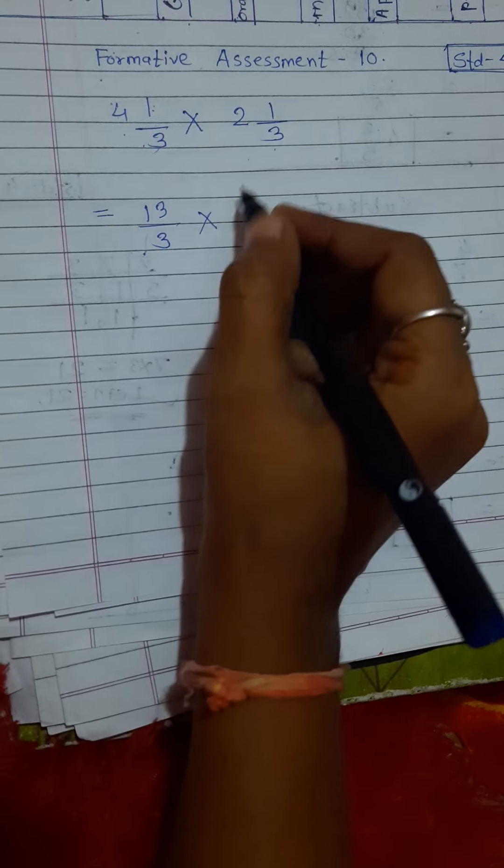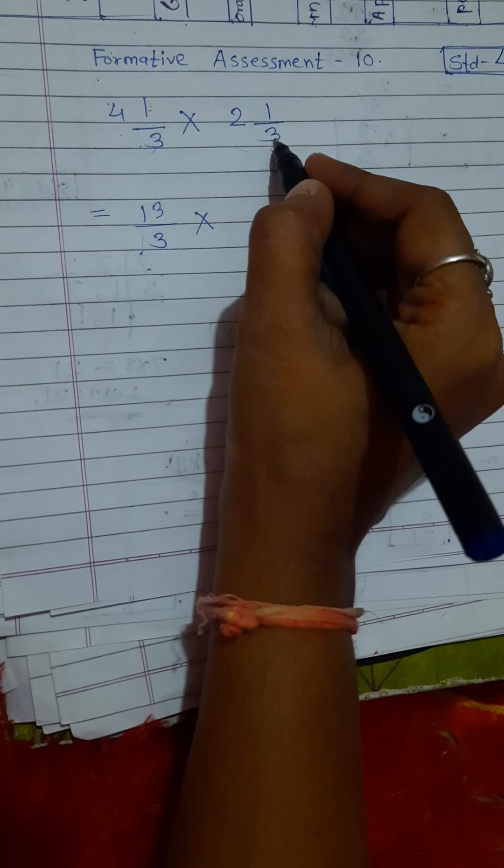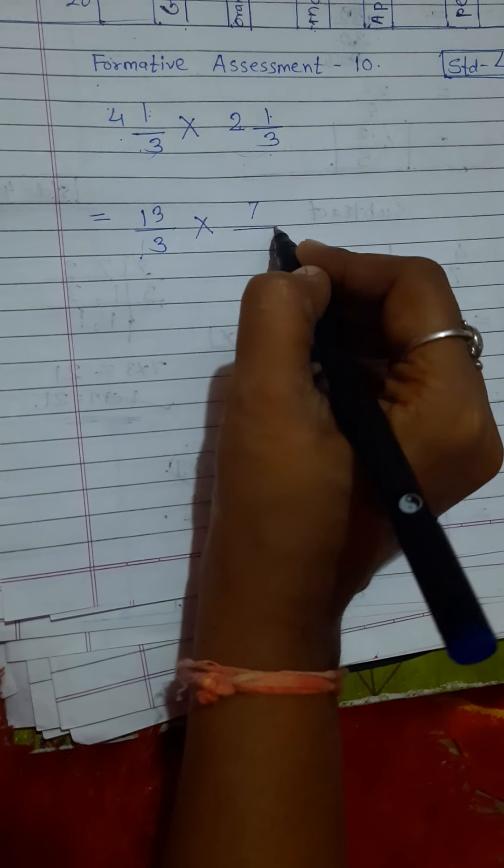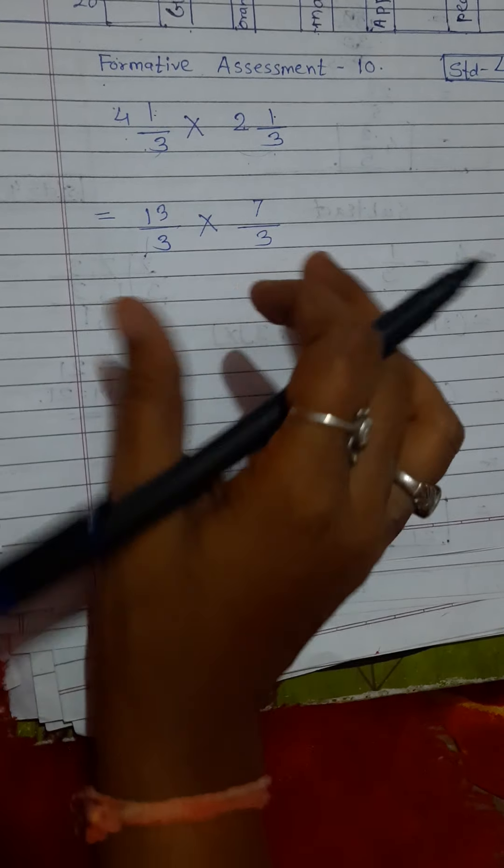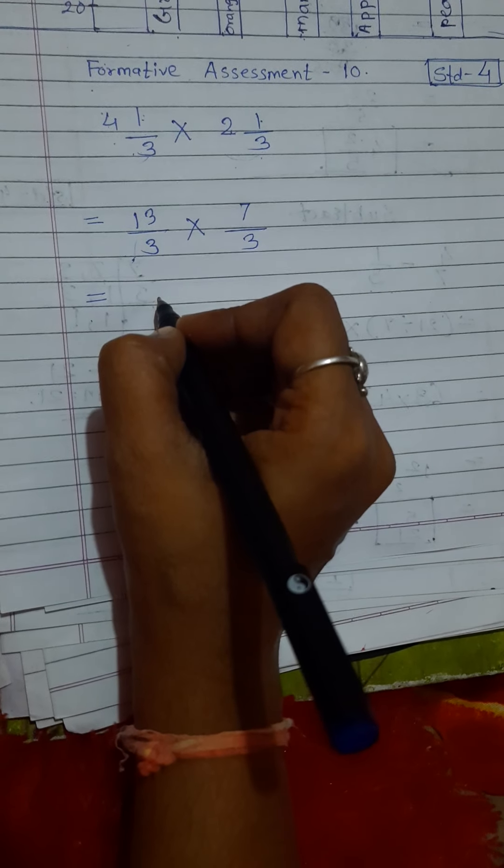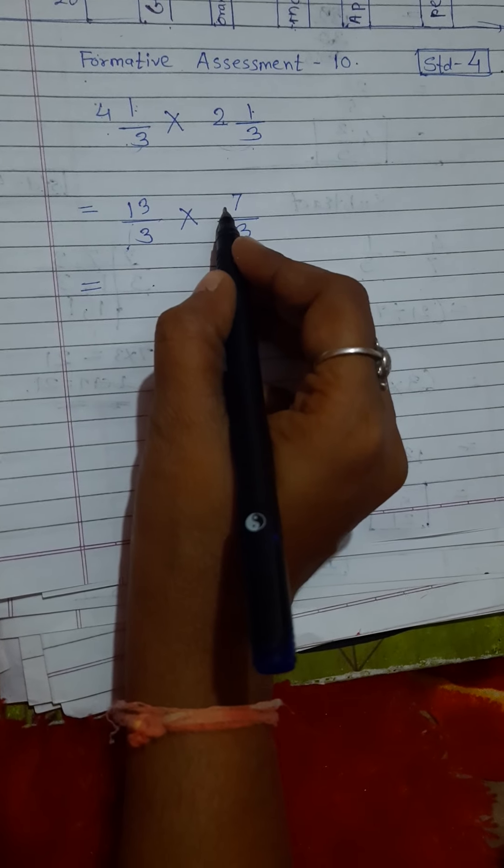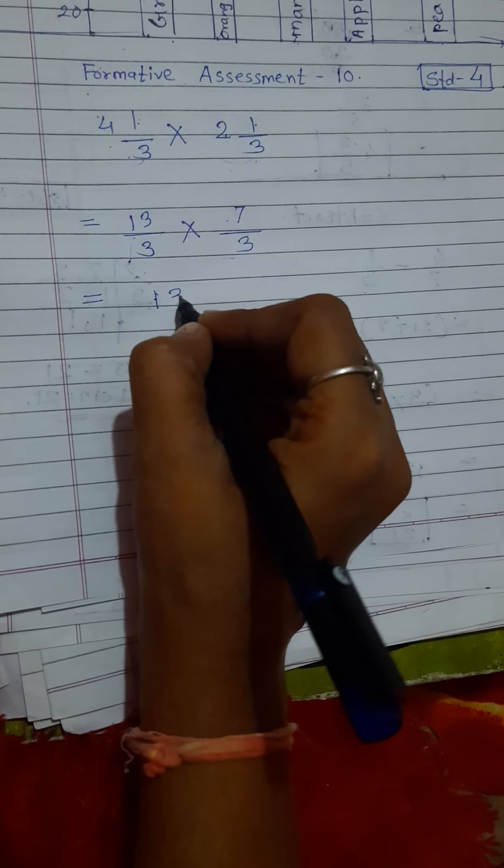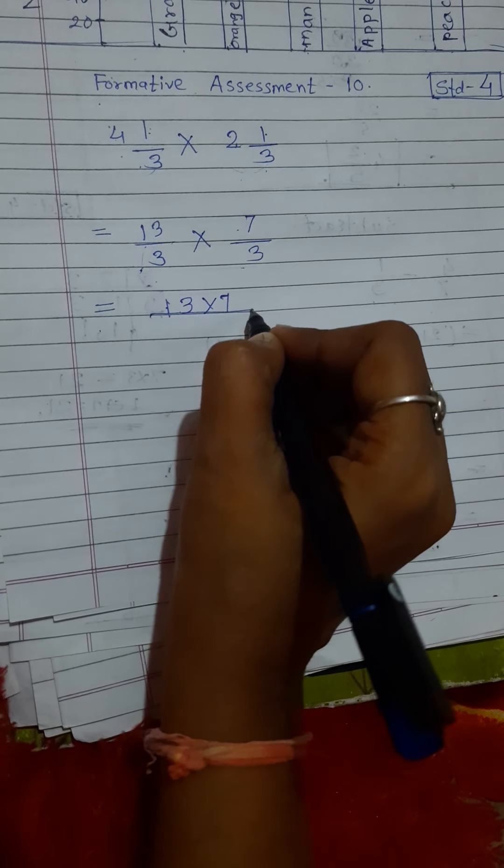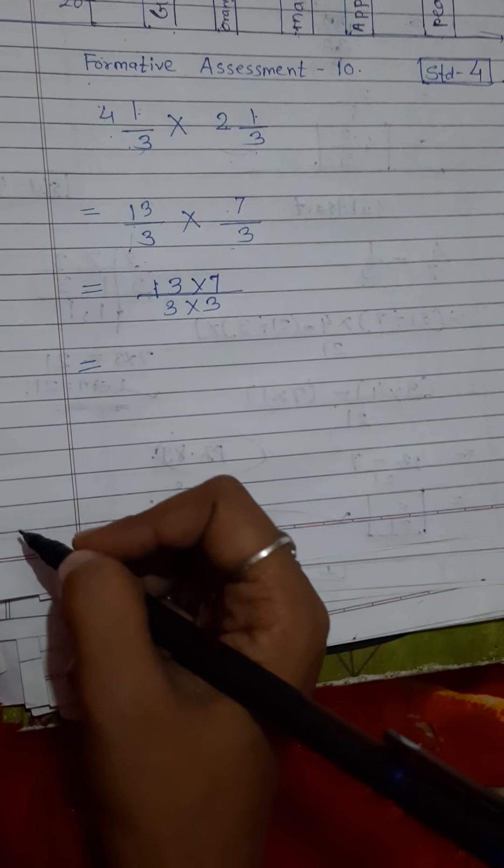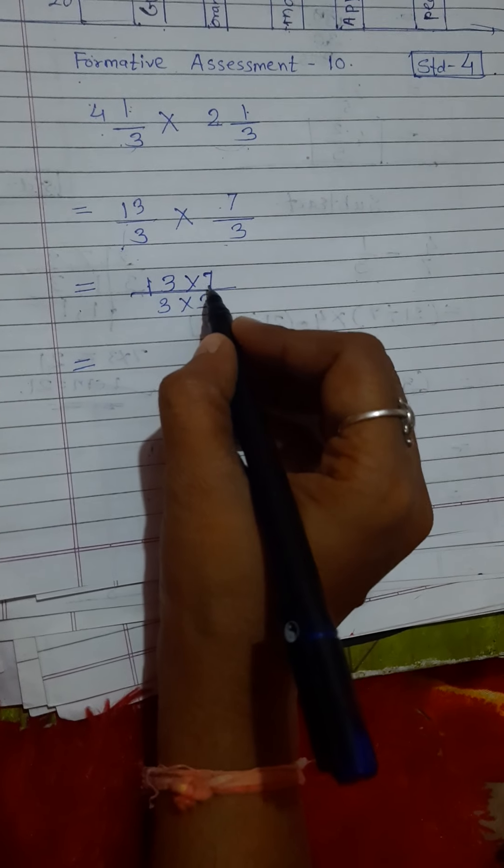Into. Now we take that second improper fraction: 3 × 2 is 6, 6 + 1 is 7, so 7/3. Here we get two fractions. Now, again, just solve that. Just multiply numerator with numerator and denominator with denominator. So just multiply that: 13 × 7 divided by 3 × 3. Now just solve that. 13 × 7.